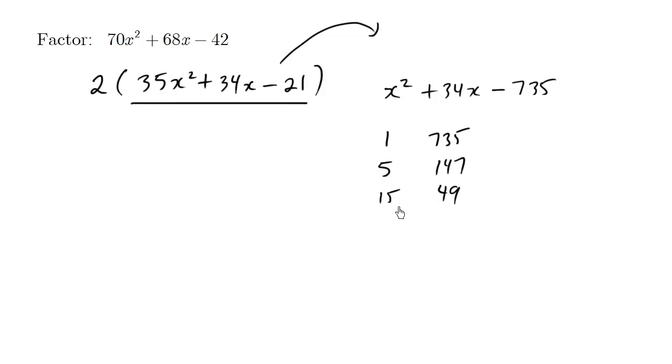Now when I look at 49 and 15, the difference, using a calculator, it indeed is 34. So let's fix the signs now. We want positive 34, so the stronger number, the bigger number is going to be positive, positive wins. And we need to multiply by a negative number to generate negative 735.